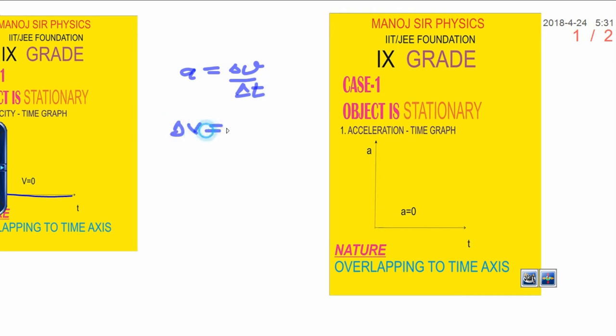Here, you know change in velocity in previous graph is 0. It means acceleration is 0 upon change in time. It means time is continuously changing. Time is changing but acceleration is 0. If acceleration is 0, it means nature of the graph is overlapping over the time axis. Thank you very much.